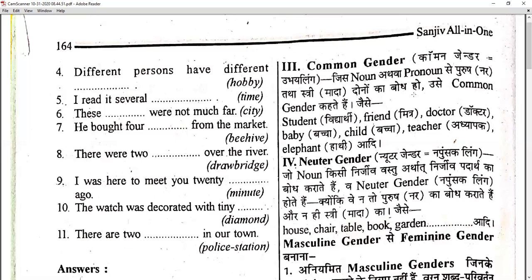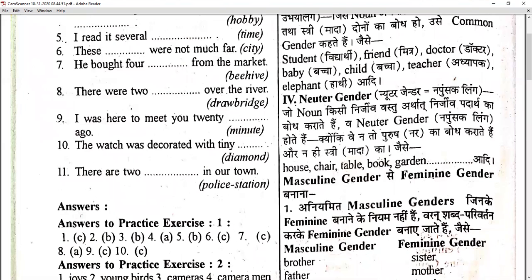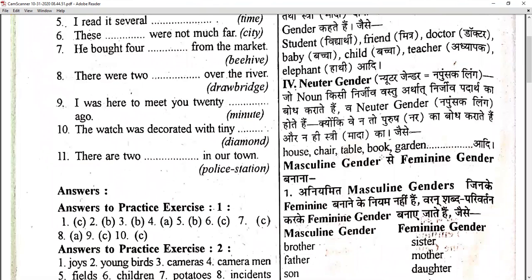So we covered: masculine gender — that which deals with the male (purush); then feminine gender — that which deals with females (istri, lady); then common gender — that which is common to both male as well as female; and then neuter gender — napunsak ling — which we use for things that are completely lifeless or non-living things.